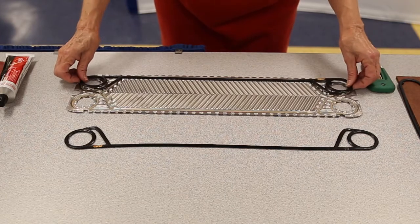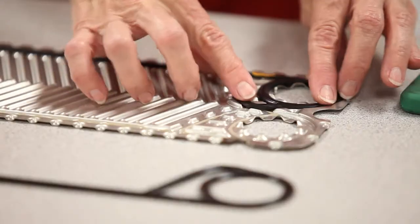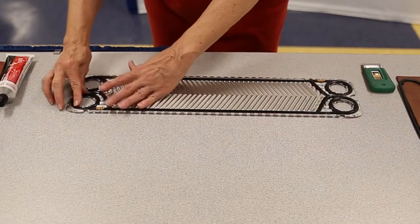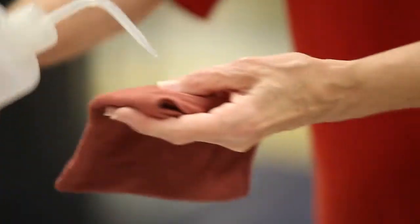Finally, place the gasket halves into the track evenly across the plate and set to the side. If any glue accidentally gets on the surface of the plate or gasket, it can easily be removed with a rag and alcohol.